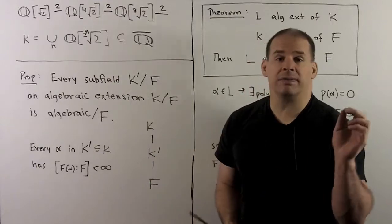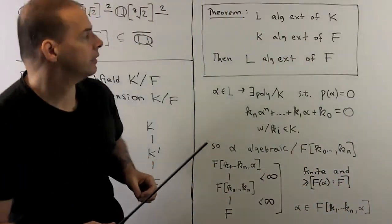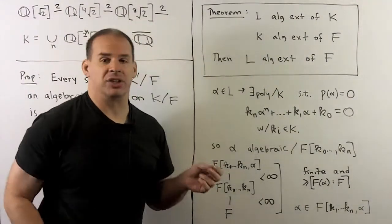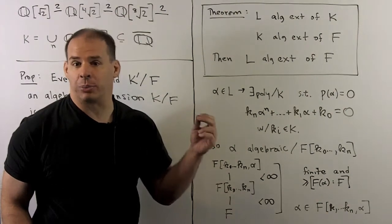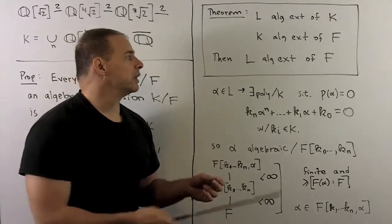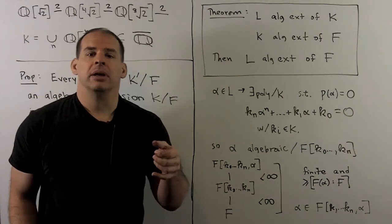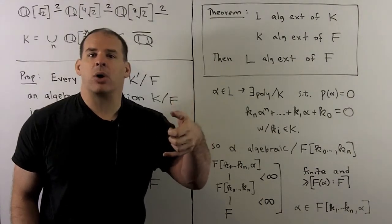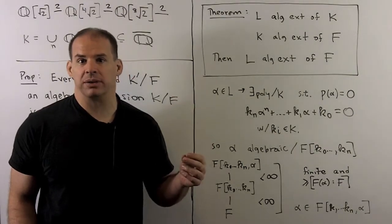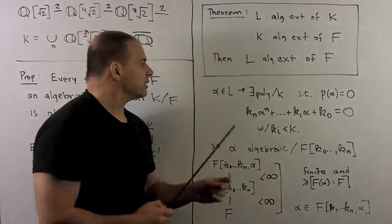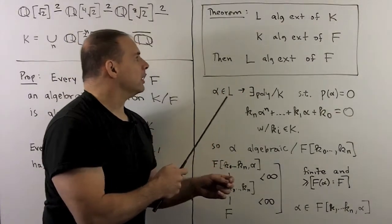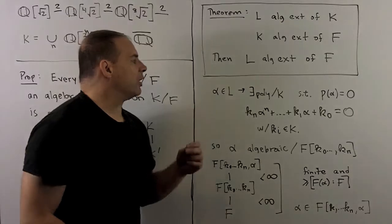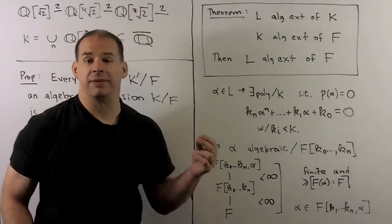This result has a very useful converse. Theorem: if l is an algebraic extension of k, and k is an algebraic extension of f, then l is also an algebraic extension of f. This says that if I have a field tower built out of stepwise algebraic extensions, then any span in that tower is also an algebraic extension. To see this, let's pick any alpha in l. Because l is an algebraic extension of k, alpha is algebraic over k, so there exists a polynomial with coefficients in k with alpha as a root.